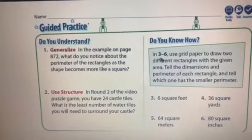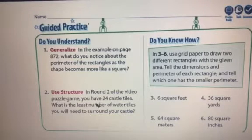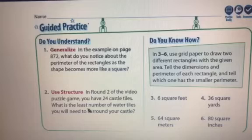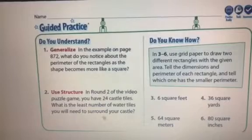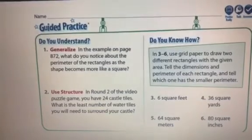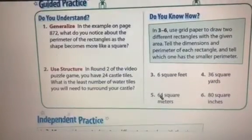In round two of the video puzzle game, you have 24 castle tiles. What is the least number of water tiles you will need surrounding the castle? Now, which numbers do you multiply to get that answer of 24?